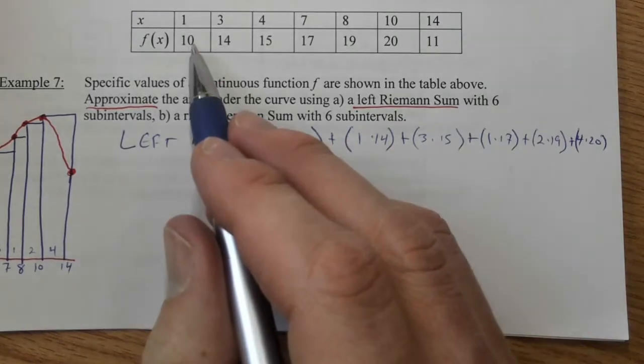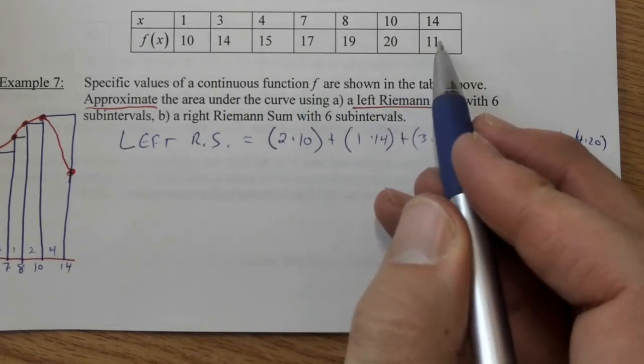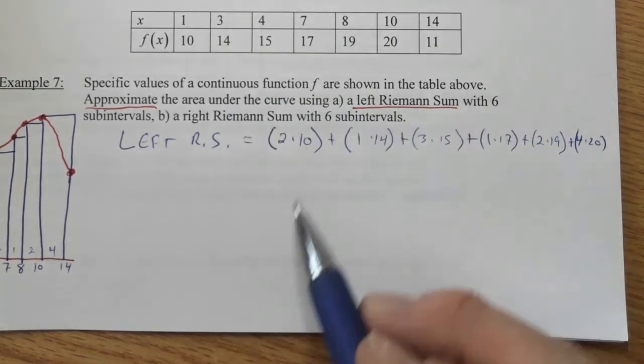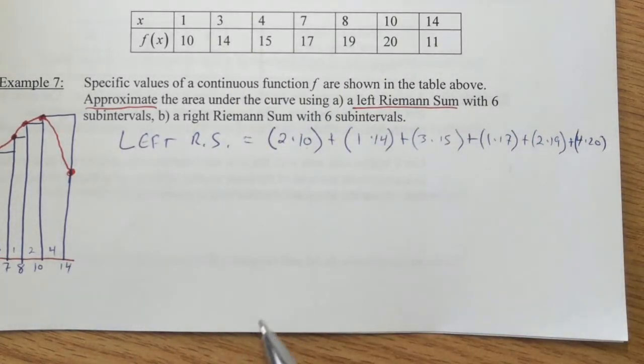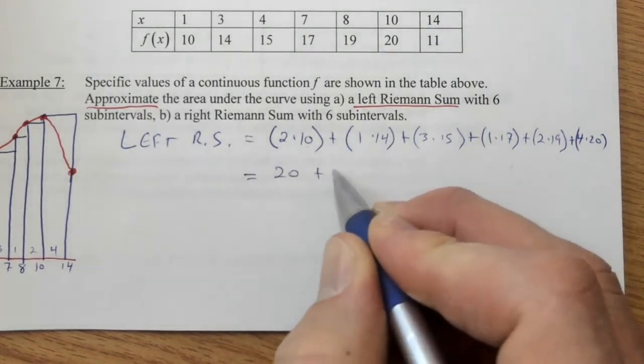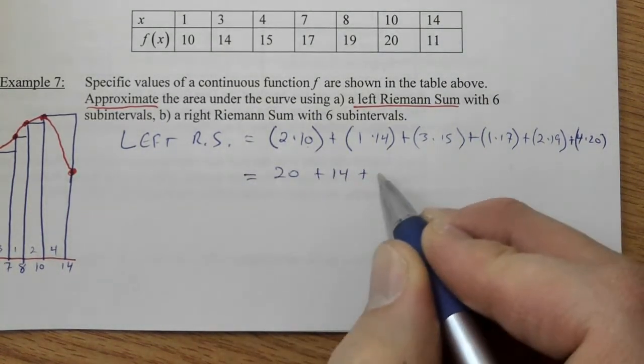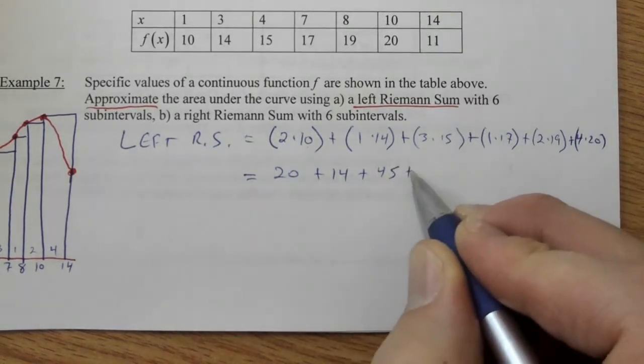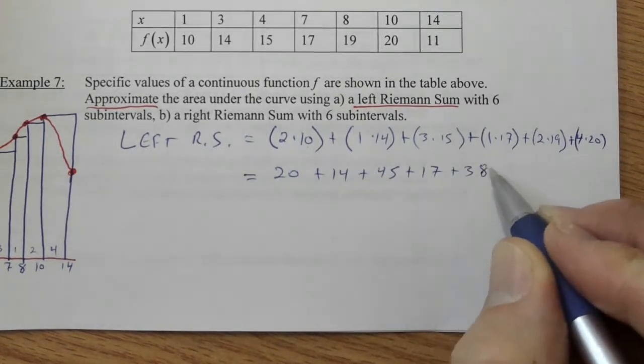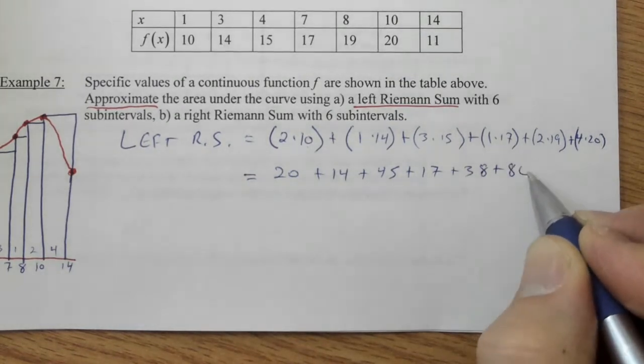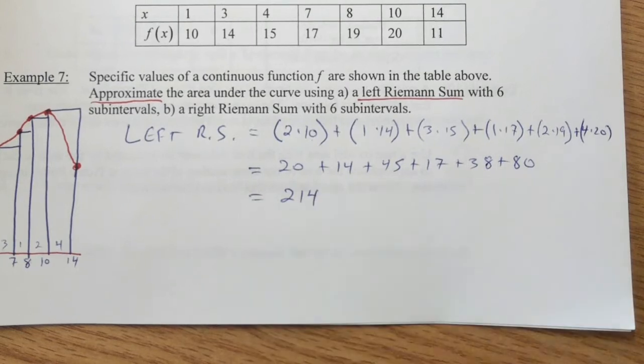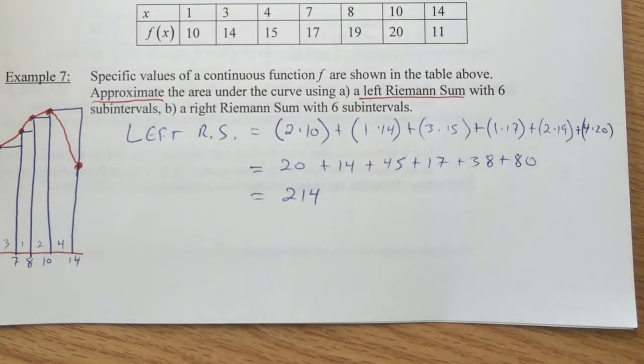We use the ten, because we have seven values. We use the first six when we're doing a left Riemann sum. If we map this out here, we've got twenty plus fourteen, plus three times fifteen is forty-five, plus seventeen, a pair of nineteen's is thirty-eight, and four times twenty is eighty. We take out our calculator, and this works out to be two hundred and fourteen. So there's our left approximation.